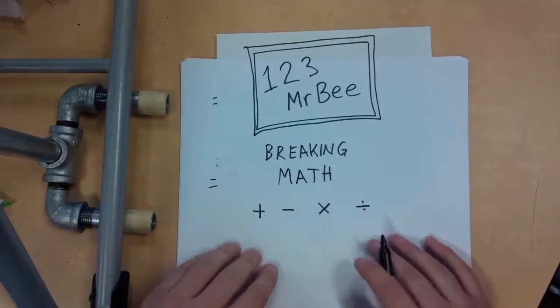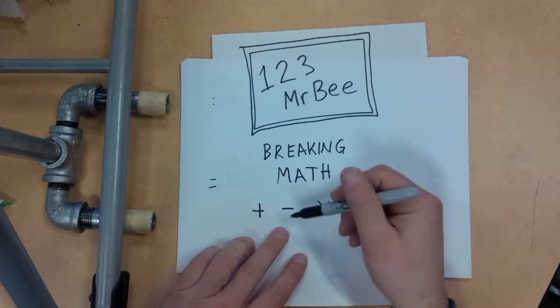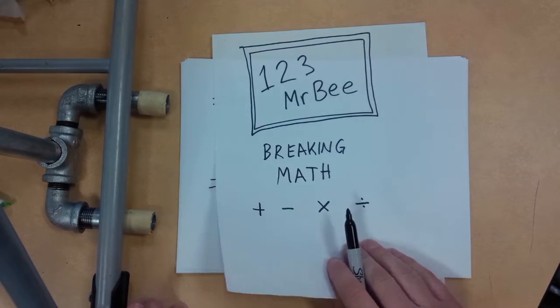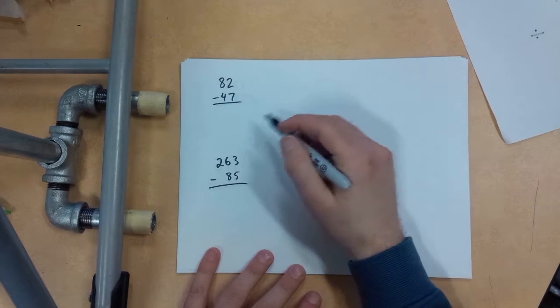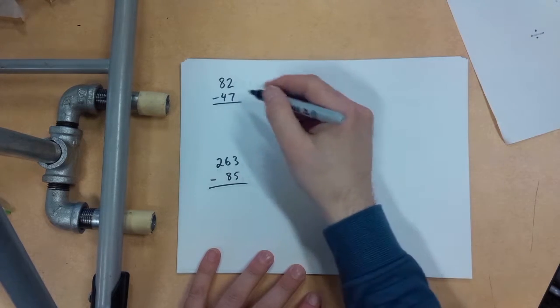Hey everybody, it's 123MrB here. We're going to do a quick breaking math subtraction practice here. This has to do with the trick called the bump up or the bump down. In this case it's going to be bump up examples here.